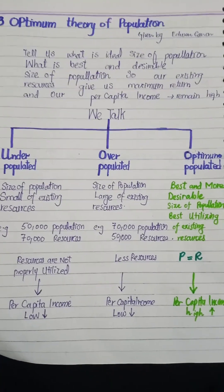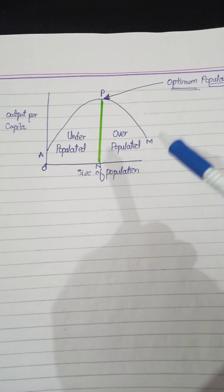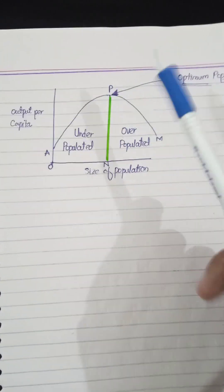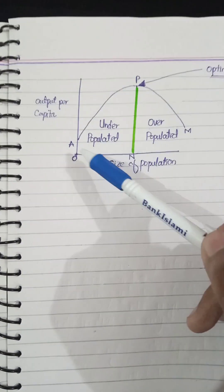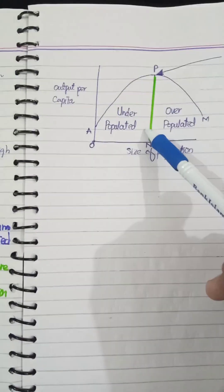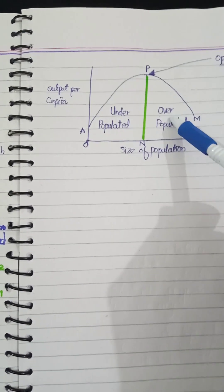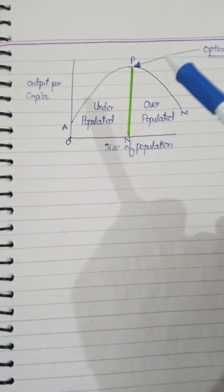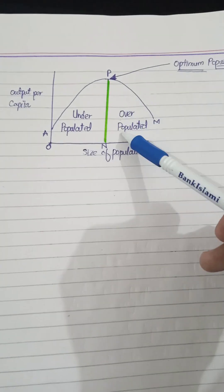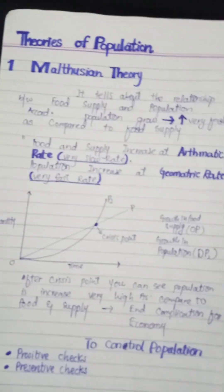Optimum population is the best and most desirable size of population where existing resources are best utilized and are equal to population needs, making per capita income high. In Pakistan, for example, we have a population where resources are not fully matched. When population and resources are equal, that is the optimum population. So this was the optimum theory of population.